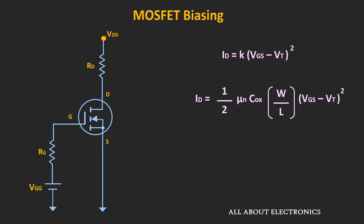As a circuit designer, when we want to use a discrete MOSFET as an amplifier, these parameters are not known to us. Instead, in the datasheet, for a particular value of Vgs, the drain current ID is given — specifically, for Vgs(ON), a value of ID(ON) is provided. In some academic examples, the device parameters are given, while sometimes the values of Vgs(ON) and ID(ON) are given to find the value of K. Using all these values or device parameters, we can find the drain current ID at any given value of Vgs.